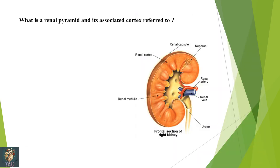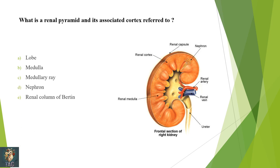Next: what is the renal pyramid and associated cortex referred to? The renal pyramids have small amounts of cortical tissue on their sides forming the lobes. Correct option is A: the lobe.